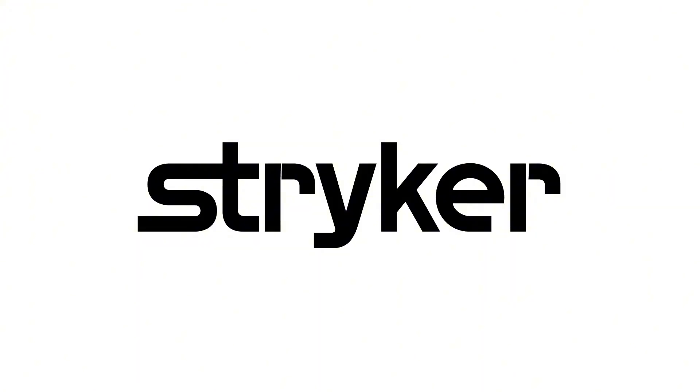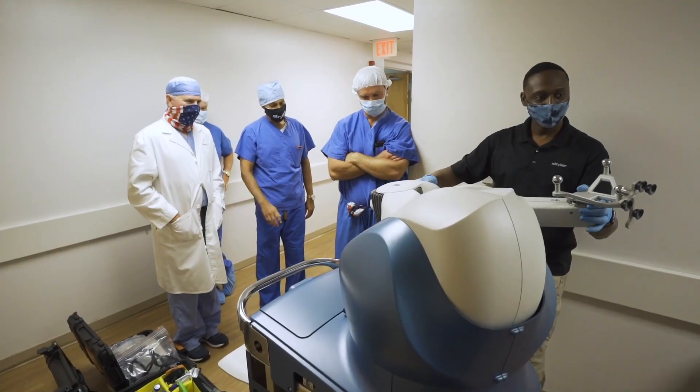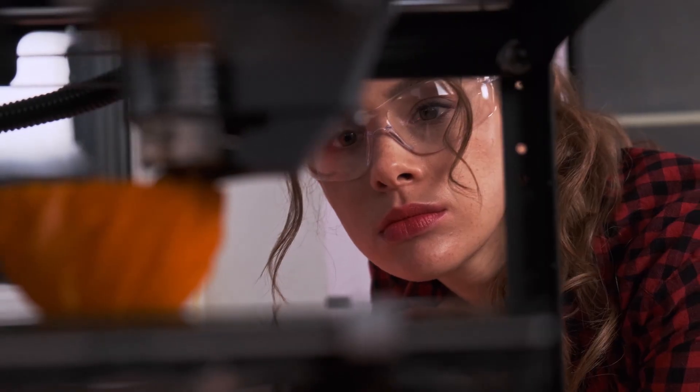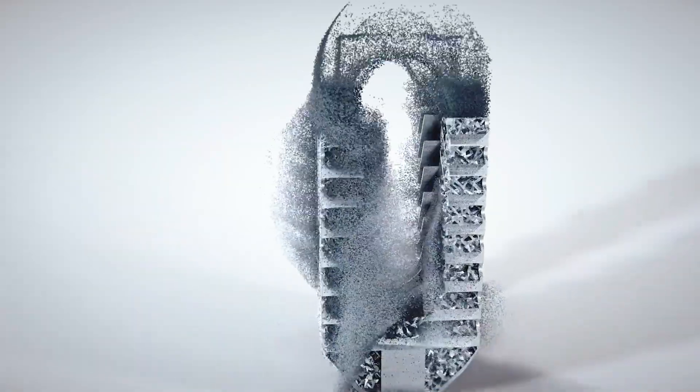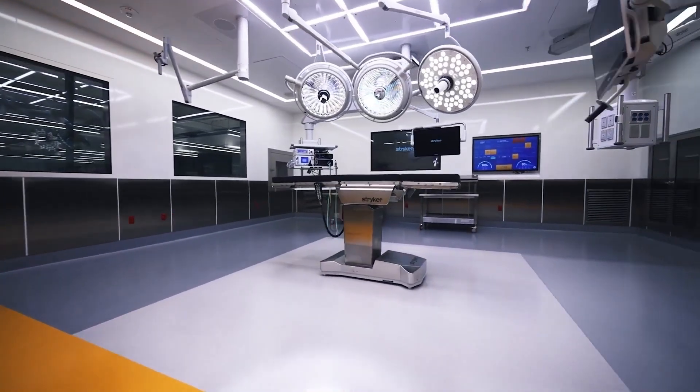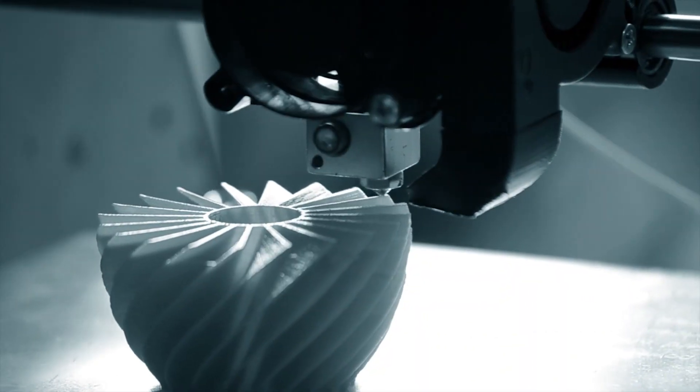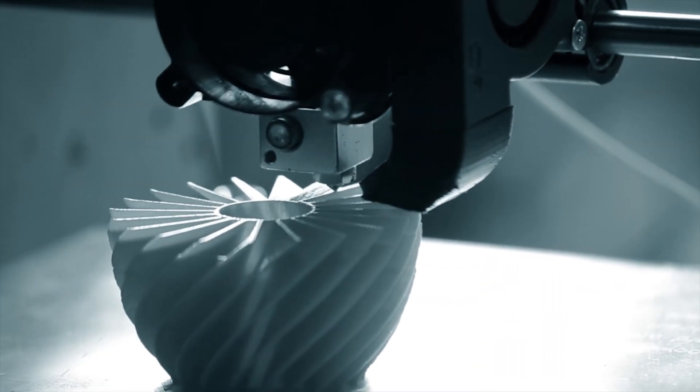Stryker takes robotics to orthopedics. Their Mako platform uses AI to plan and guide joint replacements with submillimeter accuracy. It's already becoming standard in knee and hip surgeries, and the company is now expanding into spine and shoulder. While Medtronic focuses on precision in heart and metabolic care, Stryker is rewriting how bones and joints are repaired.